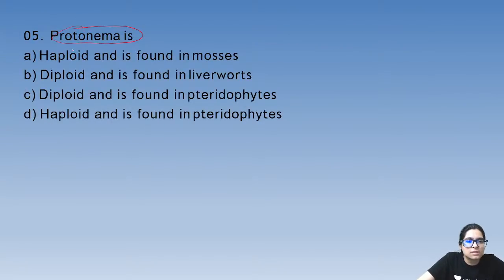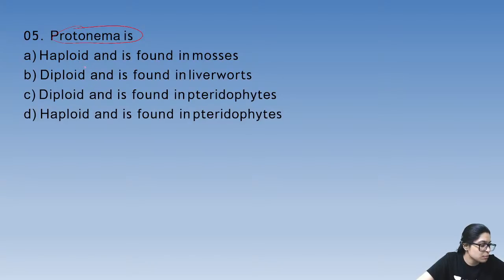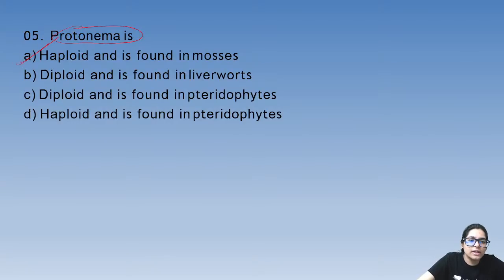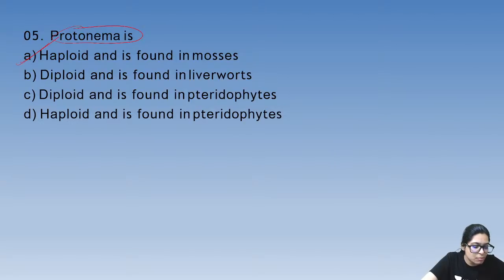Next, question 5: protonema — what is it? Protonema is haploid and is found in mosses. It is most commonly found in mosses.